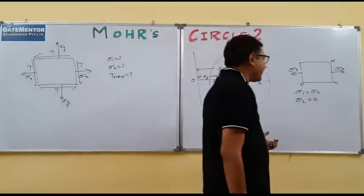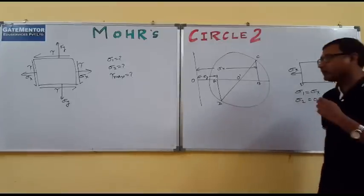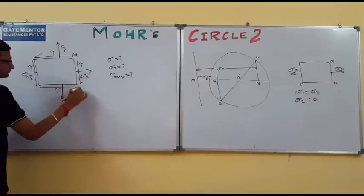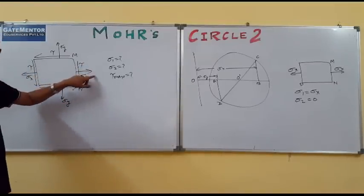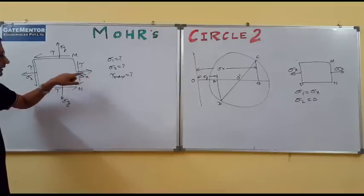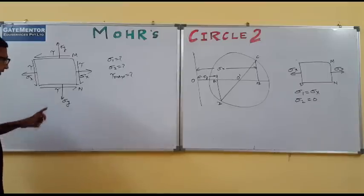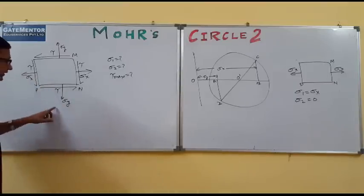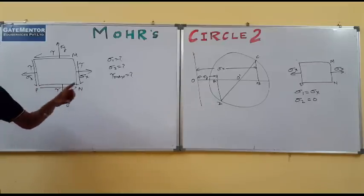This is the simple condition which can be obtained by observation. However, for the more complex condition where sigma x has an associated shear stress, sigma x is not a principal stress. Similarly, on plane PN there is a normal stress sigma y, but the shear stress is not equal to zero — it equals tau — so sigma y is not sigma 2.